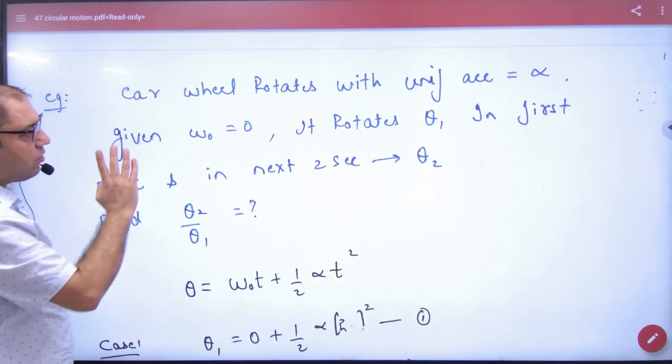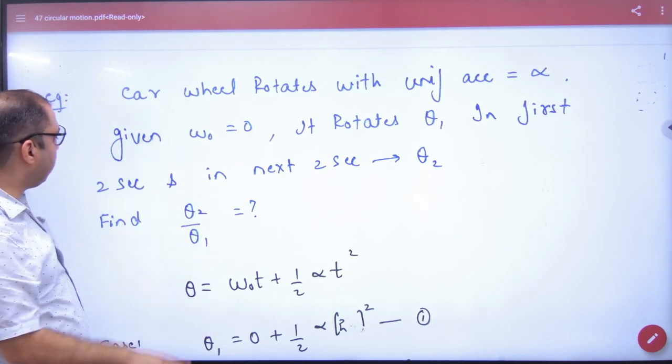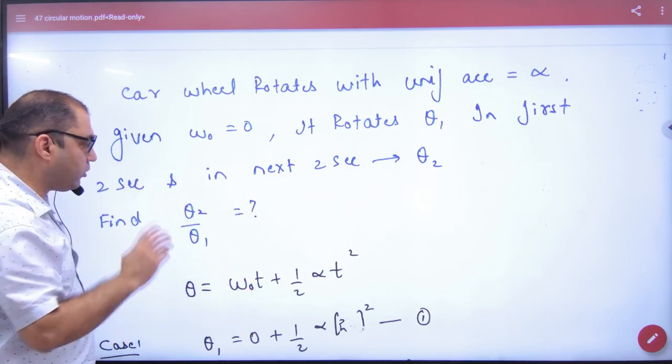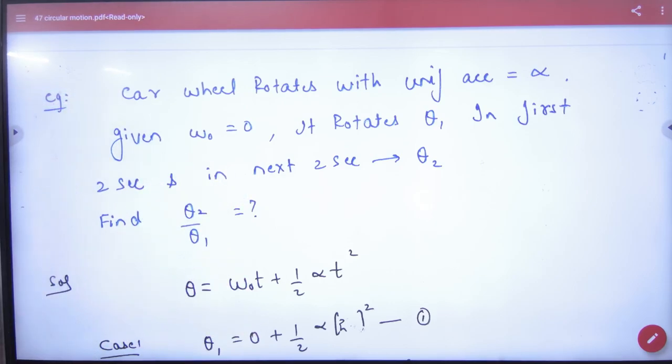Given omega not equal to zero, it rotates theta1 in first two seconds. And next two seconds, it rotates by theta2. You have to find the ratio of theta2 and theta1.